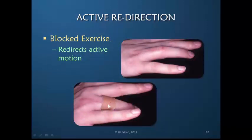We are simply taking a leather loop attached to a string which is attached to a loop around the wrist that is not allowing MP joint full extension, and it is demanding excursion to the PIP. You can see the PIP extension is significantly greater. As the patient improves, more MP joint extension would be allowed.